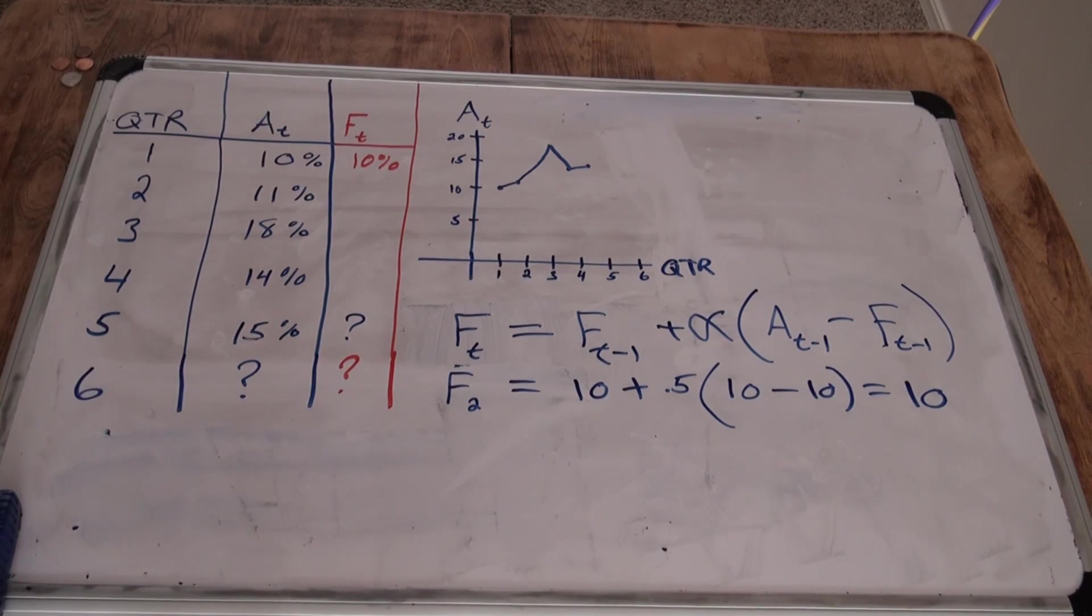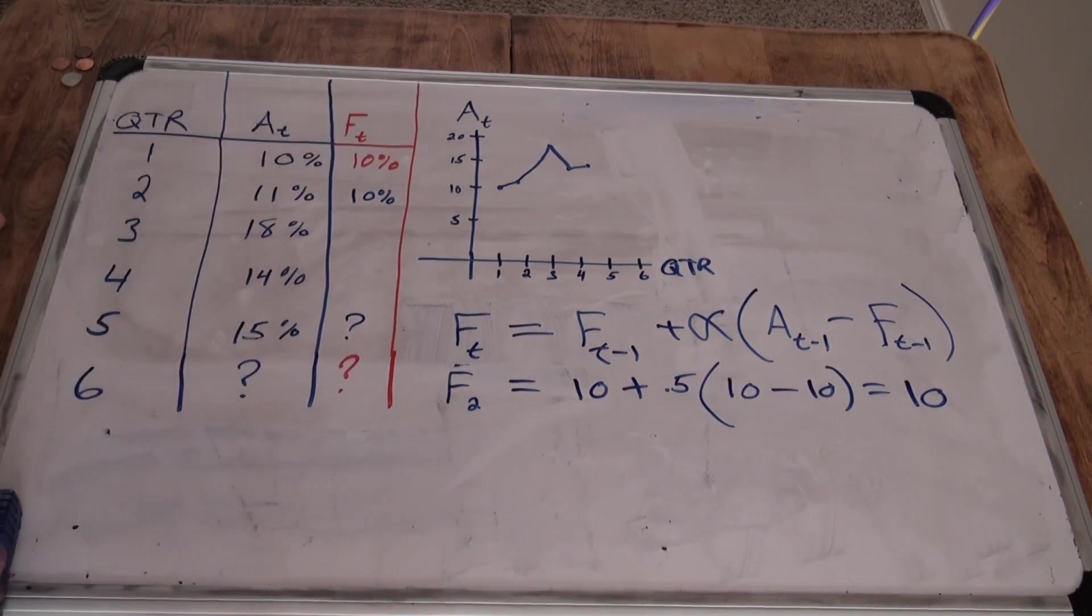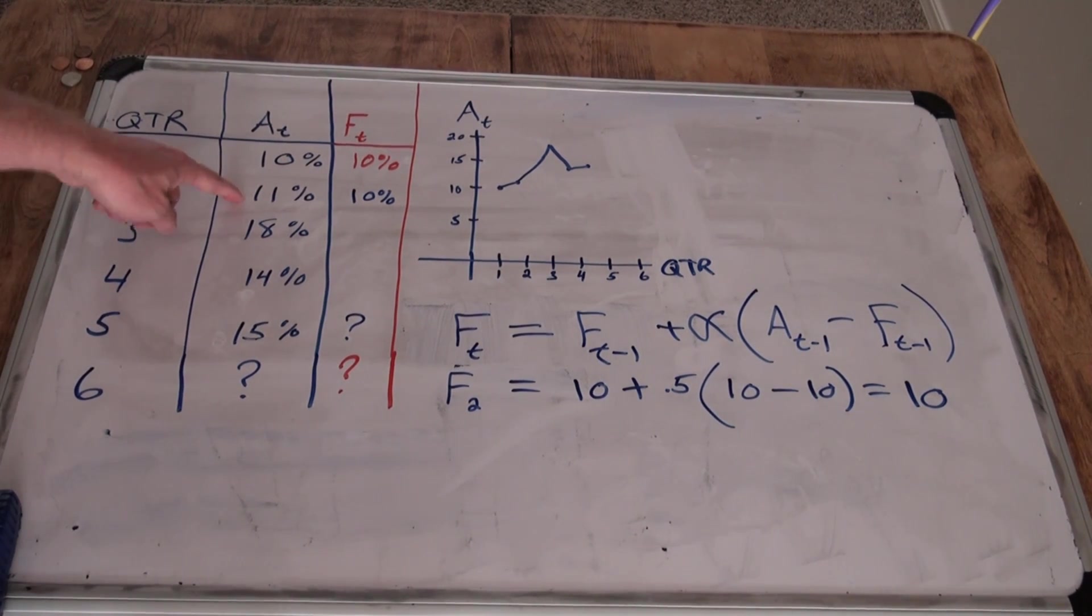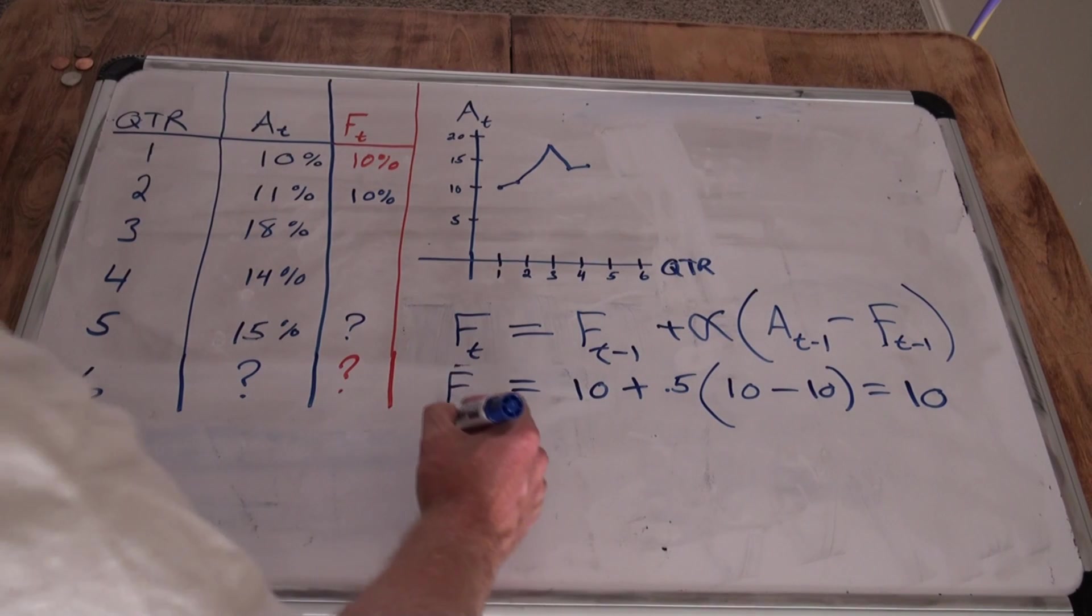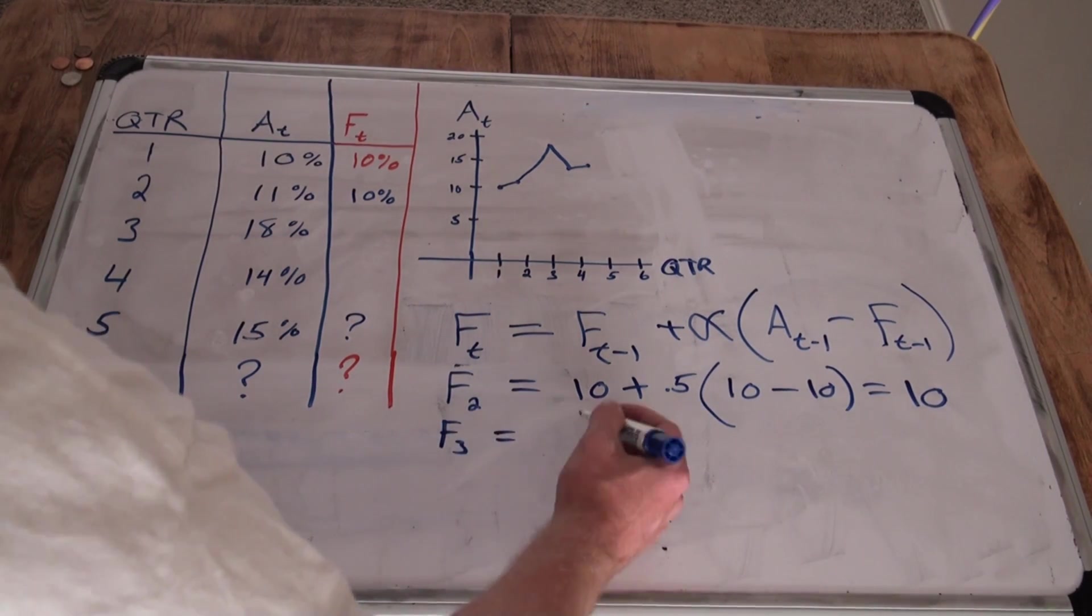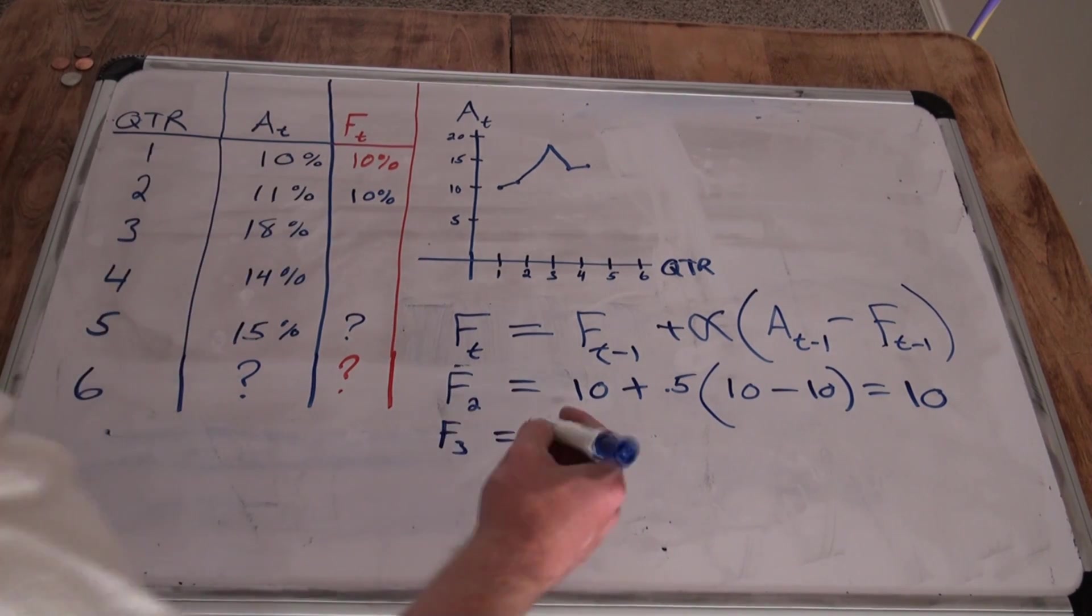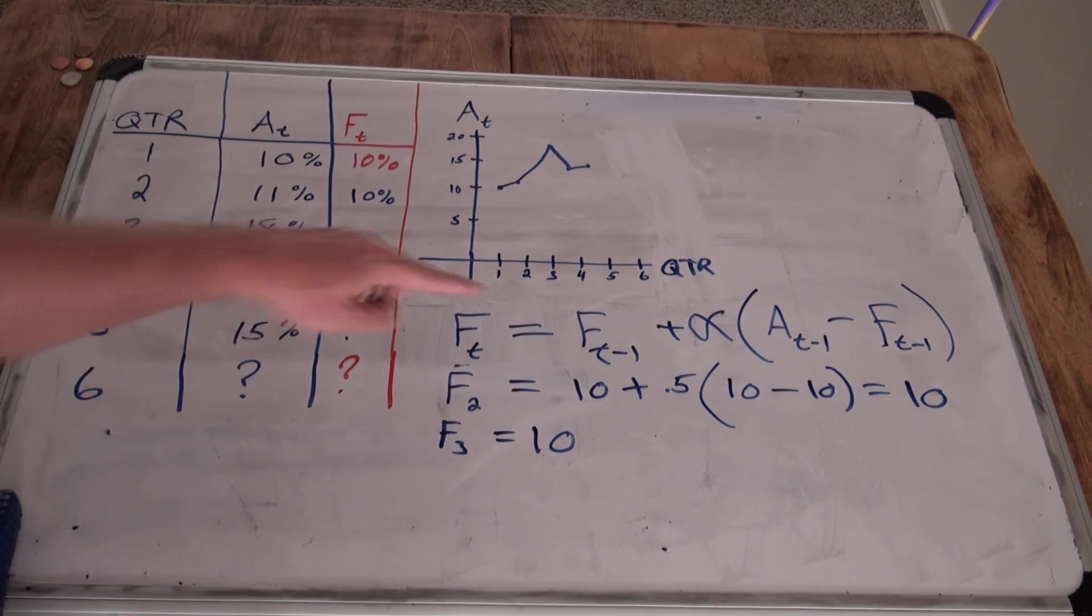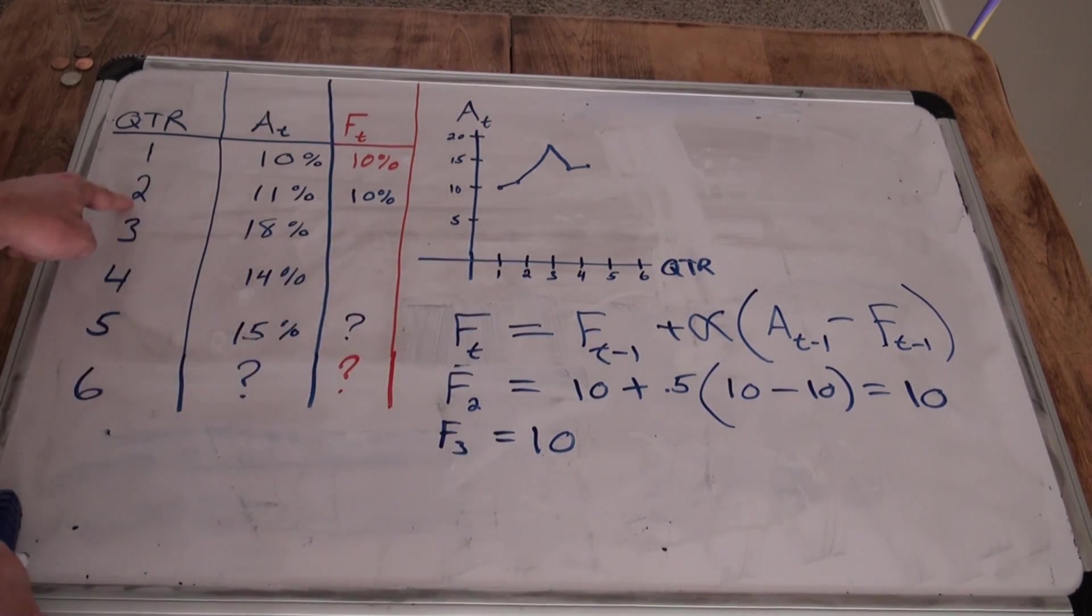So, we're going to forecast using exponential smoothing, 10% for the second quarter. Now, we know we actually got 11%, but we're doing this forecast model to come up with a better or a different way to analyze that sixth quarter. So, what is the third quarter going to be? Well, we're going to take the quarter before its forecast, which was 10%. See the formula here, t minus one, which is three minus one, which is two. Second quarter forecast is equal to 10.